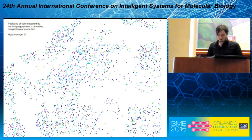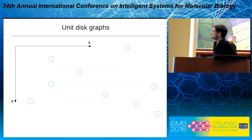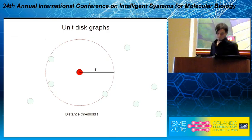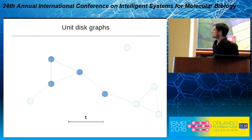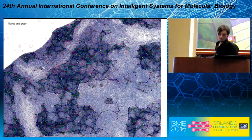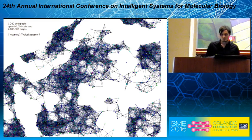Once we have the cell distribution, the question was how to model it. We used a concept known as a unit disc graph: each cell becomes a vertex of a graph, and we use a distance threshold suggested by pathologists — around 10 cell diameters — with the intention of modeling the communication of cells with their surroundings, for example by cytokines. We connect all cells within this distance threshold with an edge. Doing this for all cells yields a graph, and these graphs are also very heterogeneous — in some images there are around 500 CD30-positive cells, and in some images around 90,000, with graphs getting up to seven million edges.